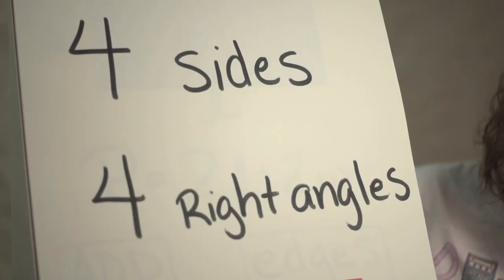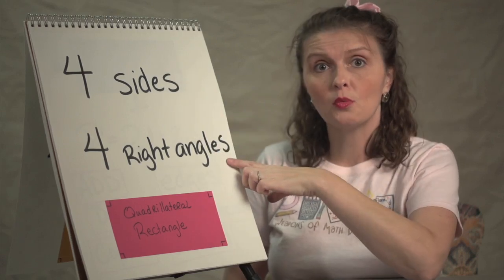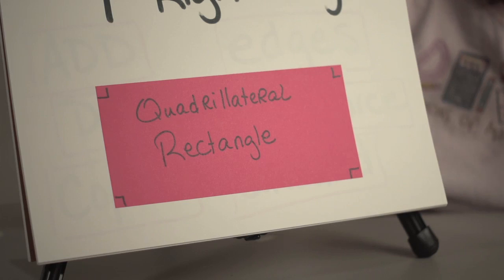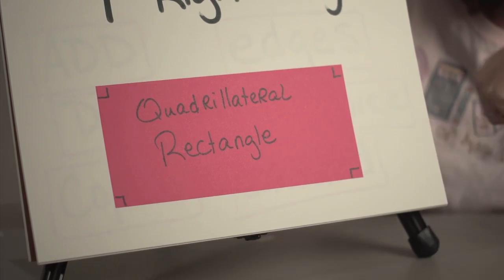A quadrilateral rectangle, as shown here, has four sides and four right angles. So any four-sided figure that has four right angles is a quadrilateral rectangle.